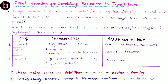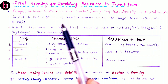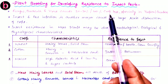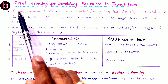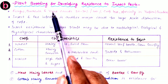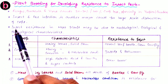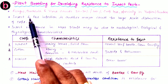Hello friends. In this video lecture we will discuss about plant breeding for developing resistance to insect pests. As discussed in the previous video, there may be 20 to 30 percent, or sometimes even 100 percent, crop losses due to pathogens like fungi, bacteria, and viruses, especially in tropical countries. The second major threat to plant productivity is insects and pests.